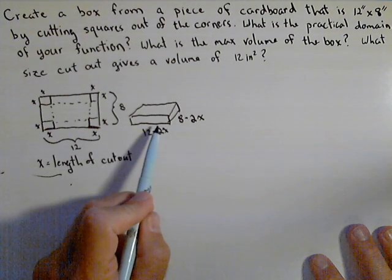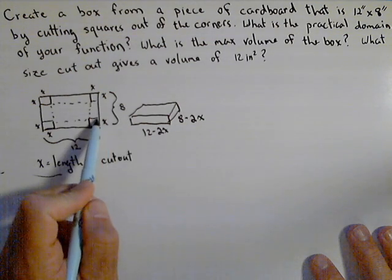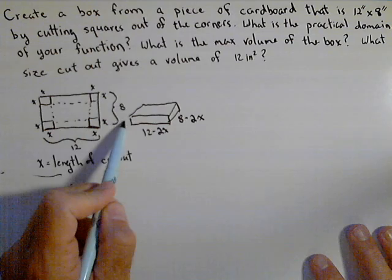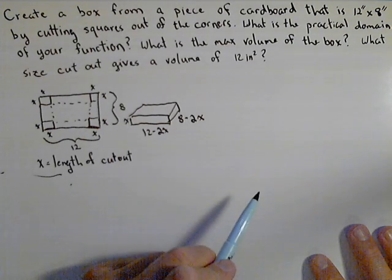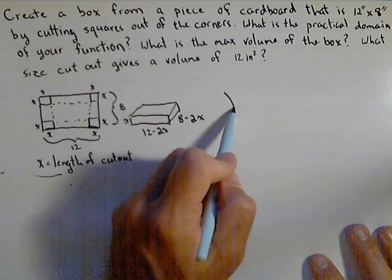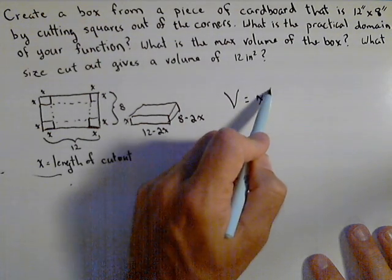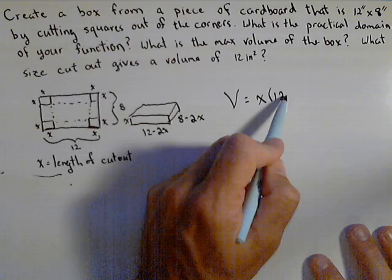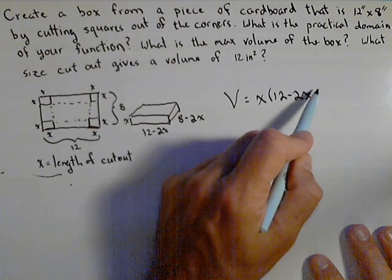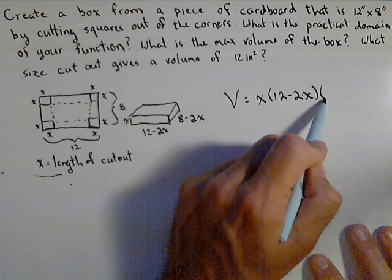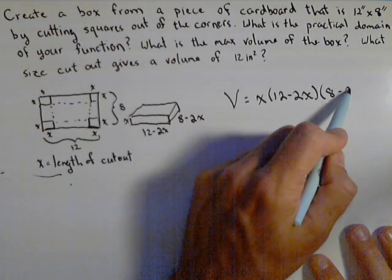Now there's one more piece to the volume, and that's the height. Remember, this piece got folded up, so the height is just x. So the volume of this box in terms of x is our height times our length, which was 12 minus 2x, times our width, which was 8 minus 2x.